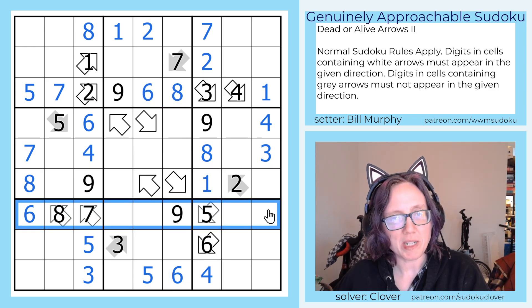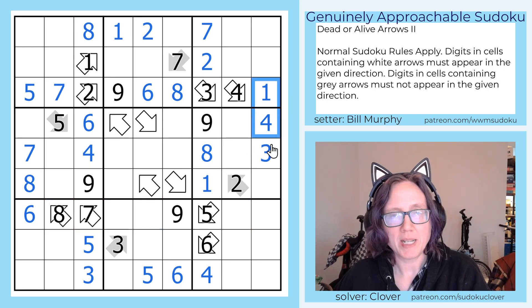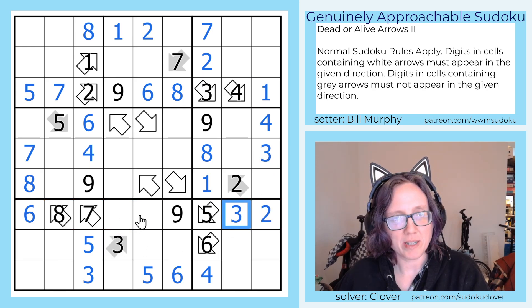And finally we need 1, 2, 3, and 4 in this row. 1, 3, and 4 here gives us a 2. There's no 3 in these cells, so 3 goes there. And 1 and 4 go into these two positions.